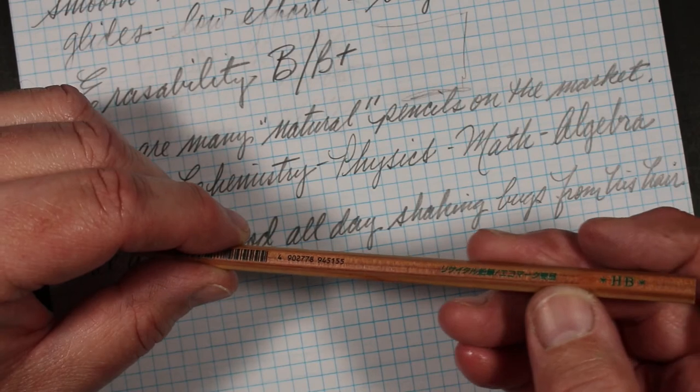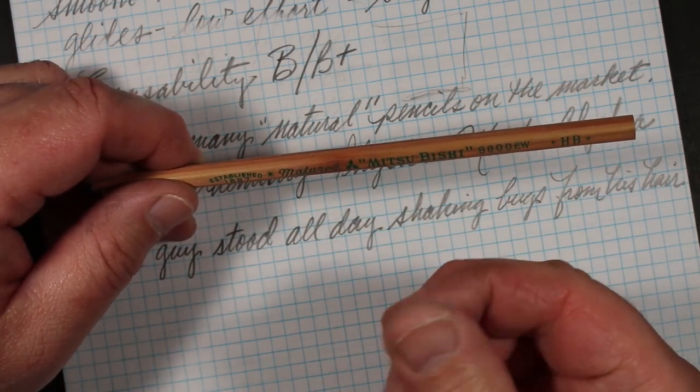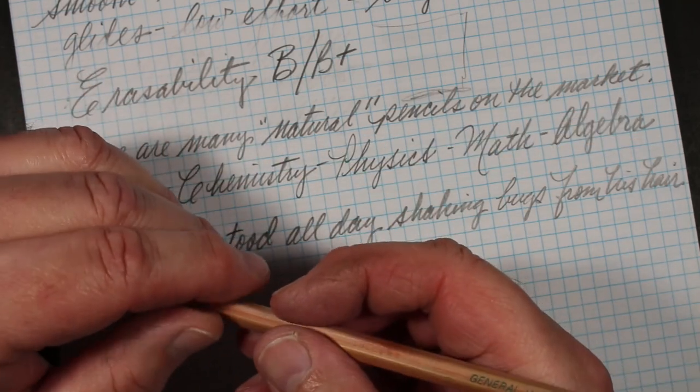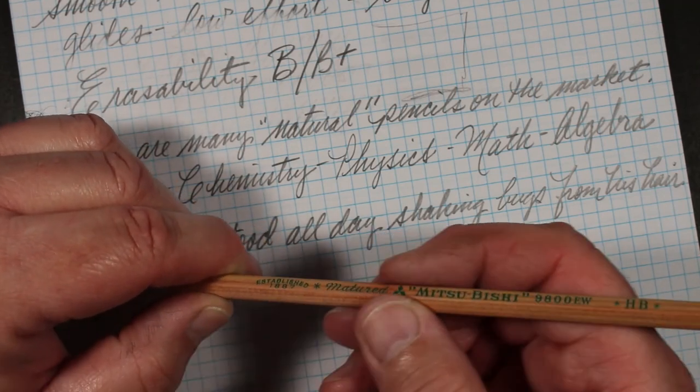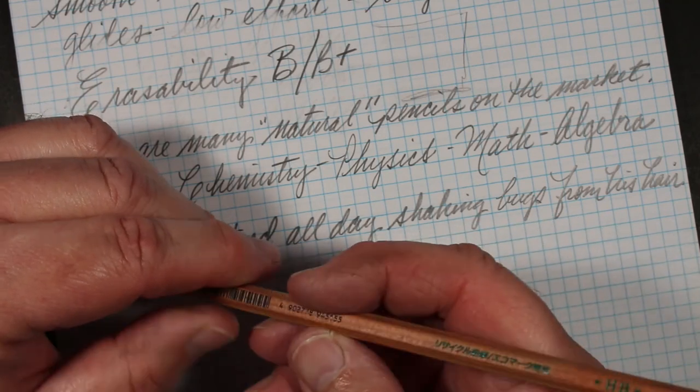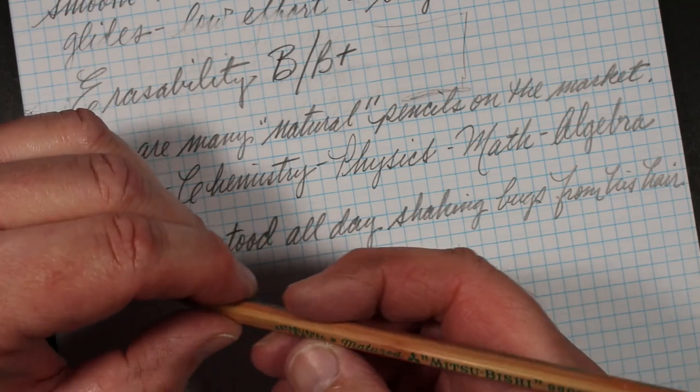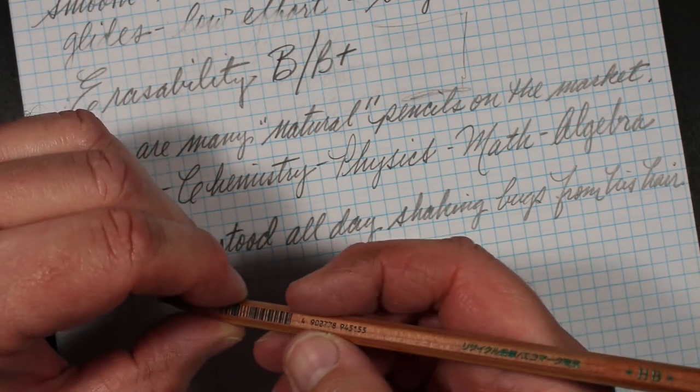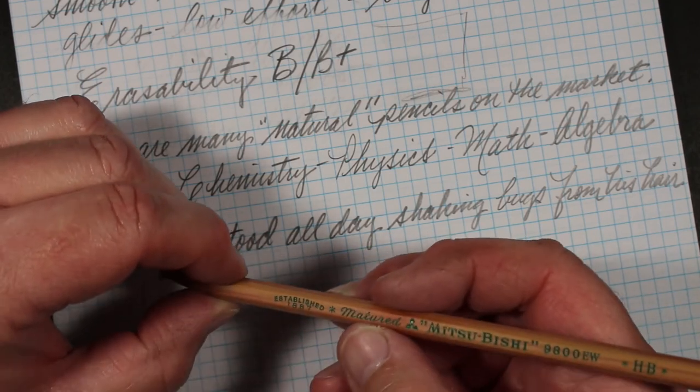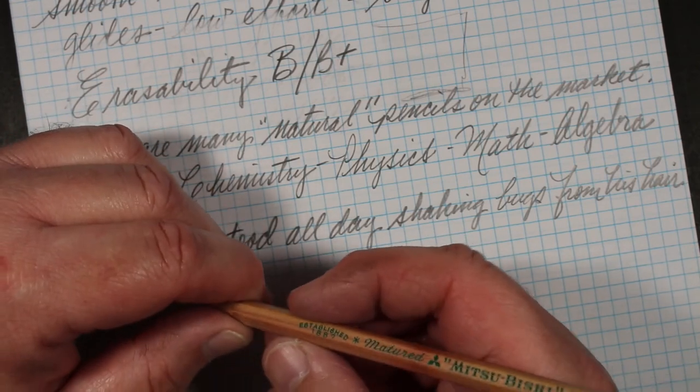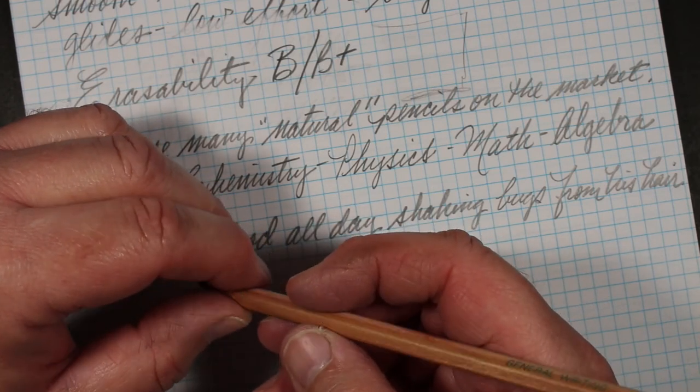The wood absorbs the oil from our skin, and the longer you hold it and the more you handle it, the more the finish, the color changes. And in a fairly short amount of time you do sort of get a little - patina might not be the right word - but you get a little coloration from just your hand working the instrument, and I kind of like that.